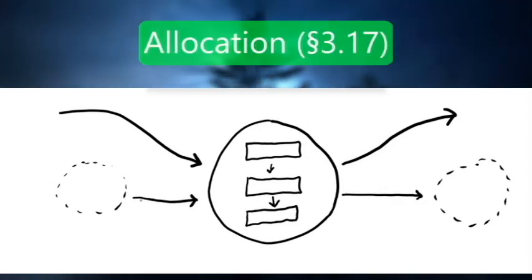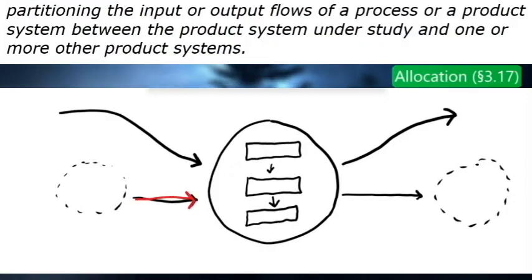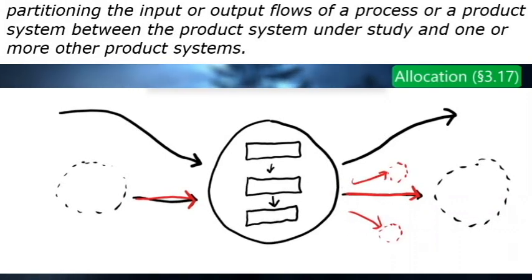Allocation is the act of partitioning the input or output flows of a process or a product system between the product system under study and one or more other product systems. Recalling the example of the hammer manufacturer from the ISO 14044 overview video, creating hammer handles from raw lumber allows those handles to be allocated to another product system — whether that be the assembly of the hammers or another intermediate process entirely.